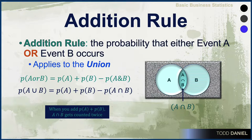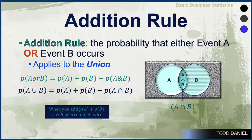Let's begin with the rule of addition for probability. The addition rule is the probability that either event A or event B occurs, and this applies to the union of two events. We write this as: the probability of A or B equals the probability of A plus the probability of B minus the probability of A and B. We can also write the same thing using the union or intersection symbols.